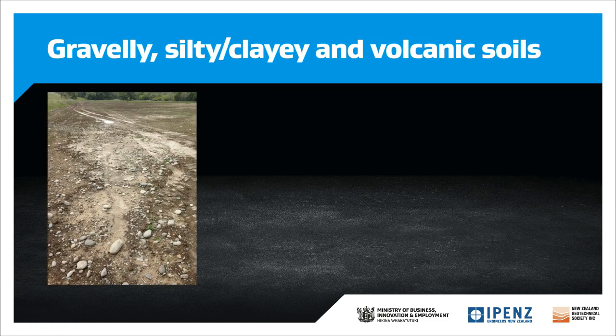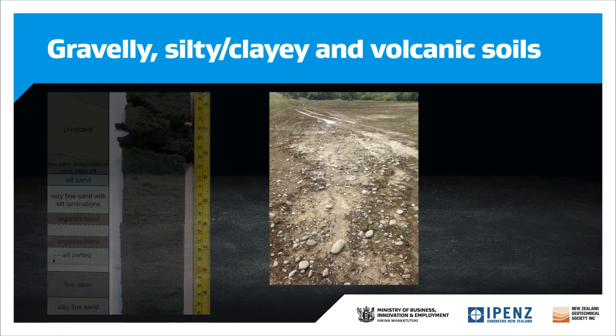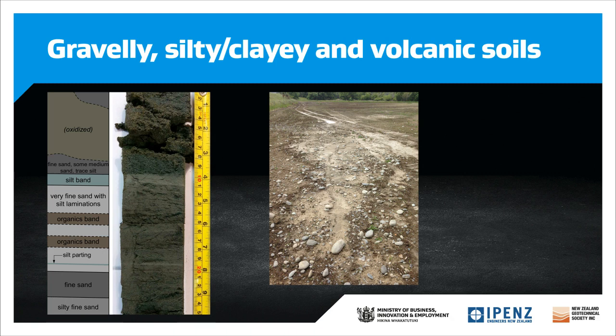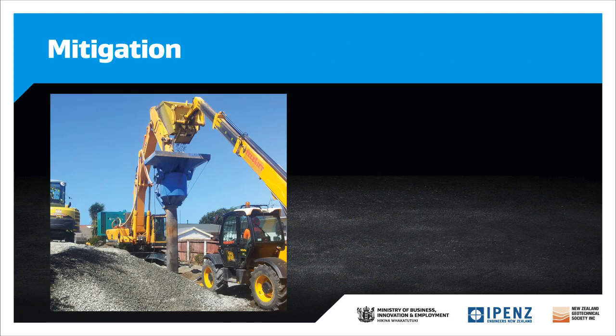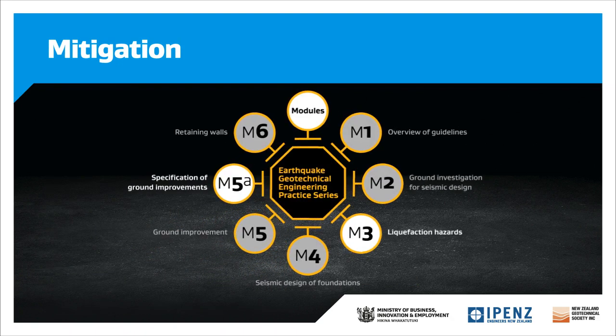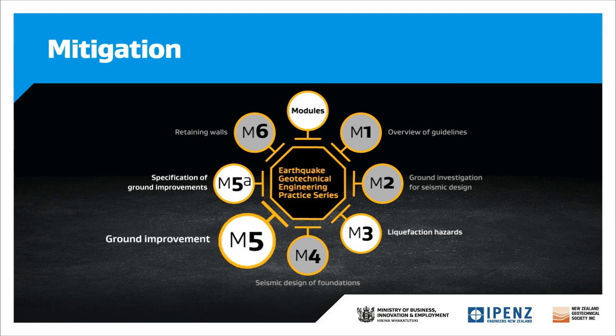Module 3 also includes expanded sections on gravelly and clay soils, and a specific subsection on volcanic soils. There is also a brief discussion on the influence of the soil matrix of gravelly soils on its liquefaction susceptibility. The module retains and slightly expands its brief discussion on the mitigation of liquefaction and lateral spreading, but note that this section will be largely superseded by Module 5, Ground Improvement, when it is published.